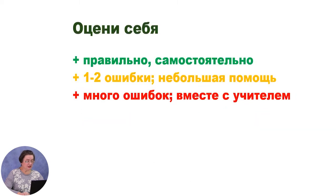Мы работали, соблюдая шаги, и выполнили все примеры верно. Молодцы! Оцени свою работу: кто самостоятельно нашёл путь правильно — пишет знак «плюс» зелёным карандашом; у кого одна-две ошибки — пишут «плюс» жёлтым; у кого много ошибок или работал с помощью — пишут «плюс» красным карандашом на полях тетради.